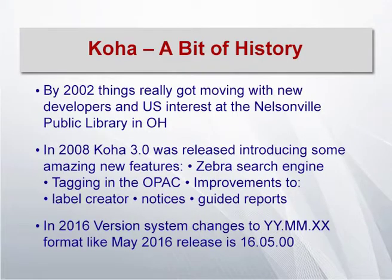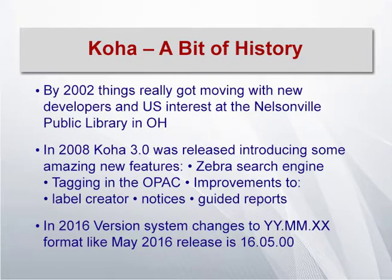In 2016, Koha's versioning system changed from major.minor to a yy.mm.xx format. For example, a release due in May 2016 would be known as 16.05.00 — where 16 indicates the year 2016, 05 indicates the month of May, and .00 is the build number.